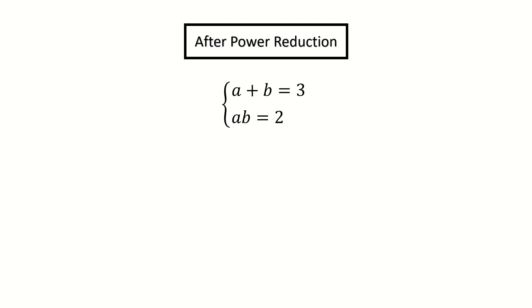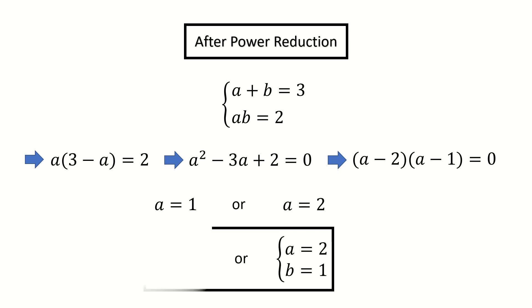Now, we are ready to solve this quadratic equation. Follow the standard procedure. We plug in the top equation to the bottom one to eliminate b, expand it, and factorize it. We get a is 1 or a is 2. For a is 1, we get the solution for b is 2. And for a is 2, we get the solution for b is 1.